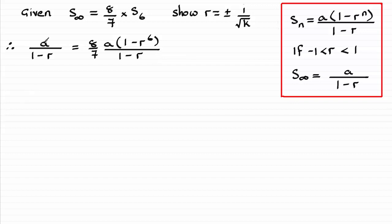I can now see that we can divide both sides by A. It's a common factor. So we can divide through by A. And we can also multiply both sides by 1 minus r. And that would cancel out.